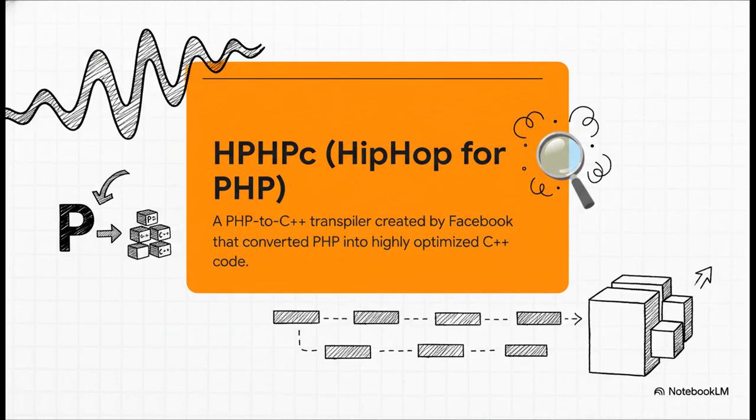It was what's called a transpiler. So instead of that live translator, imagine taking an entire book, the whole Facebook codebase, and painstakingly translating it from PHP into a much more powerful language, C++. Then you take that new C++ version and compile it into one giant, super-fast program. And you know what? It actually worked. The performance boost was huge.